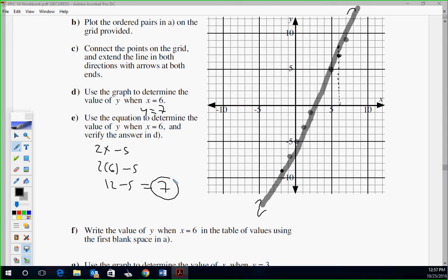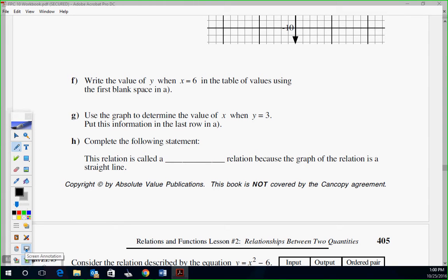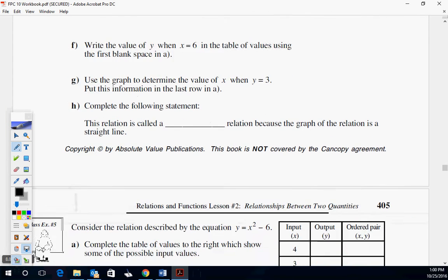Write the value of y when x equals 6 in the table above using the first blank. So, we're supposed to use that. Above you can put 6, 7 in there if you want or just put it in the side. We made our own up. How about this one? Use the graph to determine the value of x when y is 3. Up there, you have to go up to 3 for your y and find your line and come down. What do you guys get for that one? Correct. X is 4 when y is 3. And complete the following statement. The relation is called a linear relation.